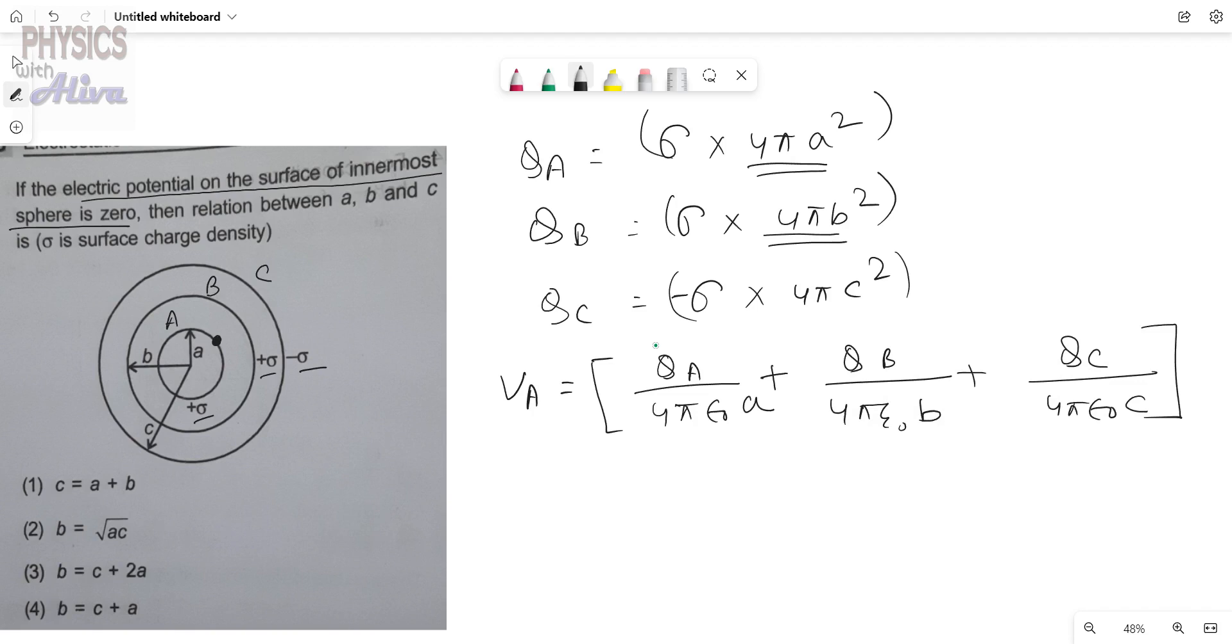Okay, it is said the potential at the point A at the surface of the A sphere is zero. So this is zero. And now we have to put the value of Q_A, Q_B and Q_C.